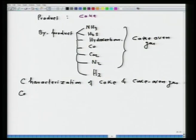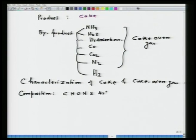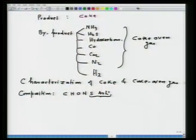From a material balance perspective, the importance is characterization of coke and coke oven gas. Since we will be using coke in the blast furnace, we must characterize it and determine what components the coke oven gas contains. If the gas has a calorific value it is very useful. For characterization of coke, the composition is important — it has carbon, hydrogen, oxygen, nitrogen, sulphur, and ash. Sulphur and ash should be minimum, since higher ash means more must be removed in the blast furnace.